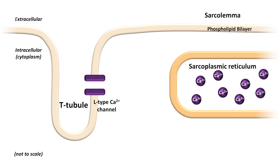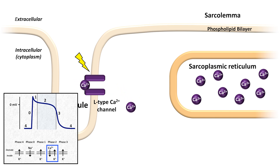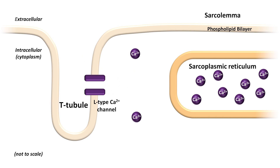So what happens when these structures encounter an action potential? If you recall from the video on the cardiac action potential, the plateau of phase 2 of the fast response action potential occurs when inward flow of calcium ions through the voltage-gated L-type calcium channels balances the outward flow of potassium ions. The inward flow of calcium is particularly prominent in the T-tubules, where the concentration of calcium channels is highest.